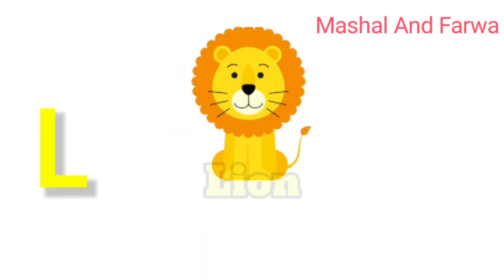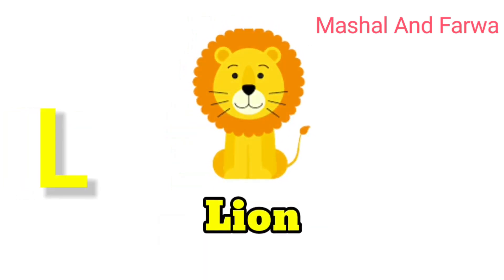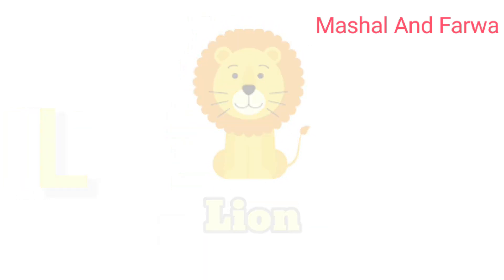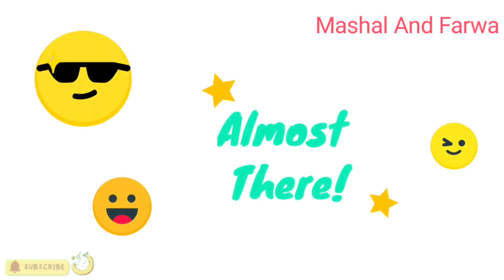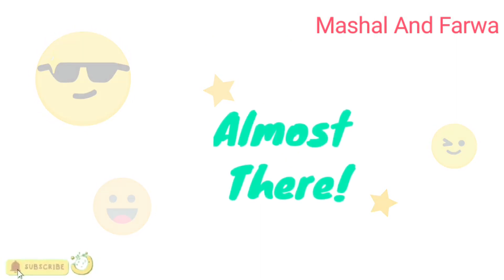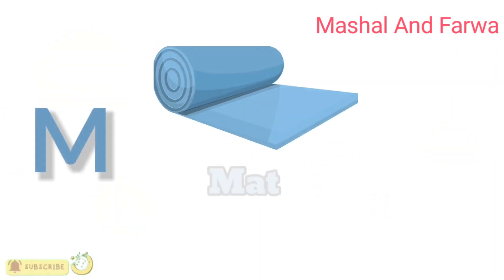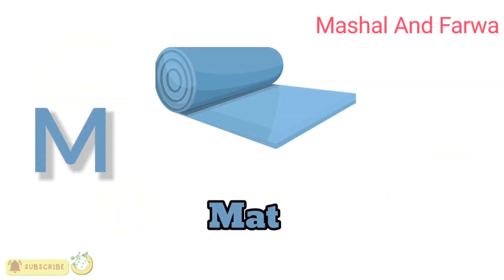L is for lion, l-l-lion. M is for mat, na-na-mat.